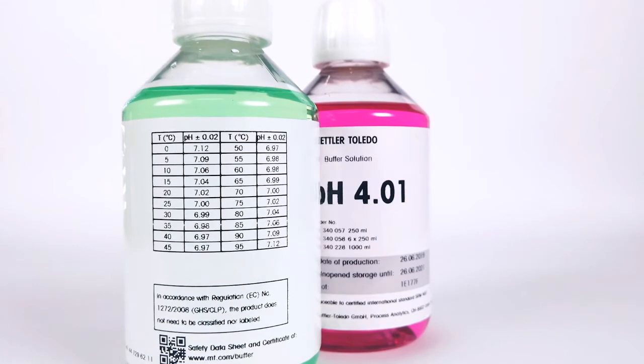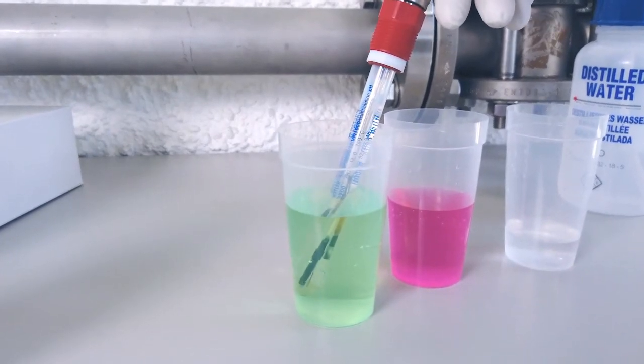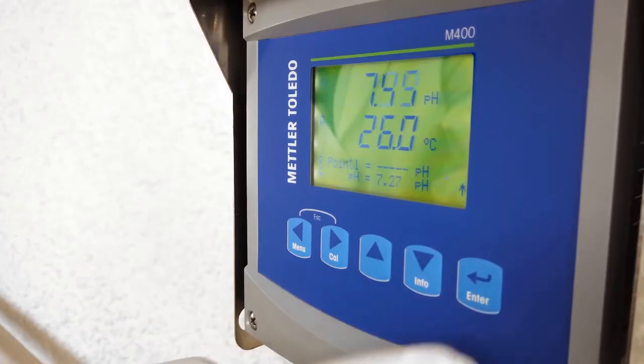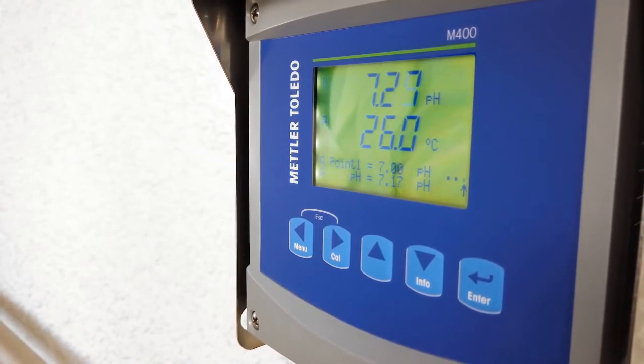Use pH 7 or pH 4 first, the transmitter will automatically detect which one it is. In this case, we're using pH 7 buffer first. Press the enter button, and on the screen you will see that it's detected pH 7 buffer and it's calibrating the first point.